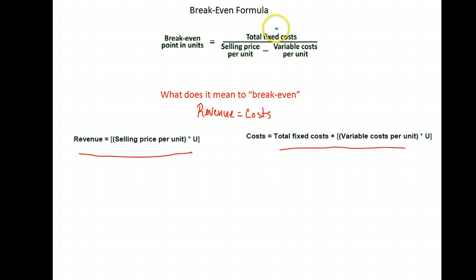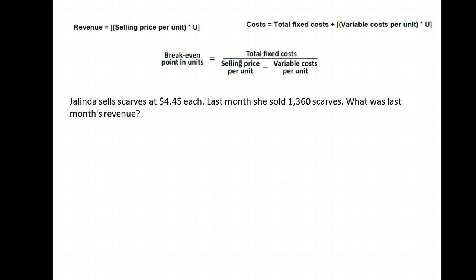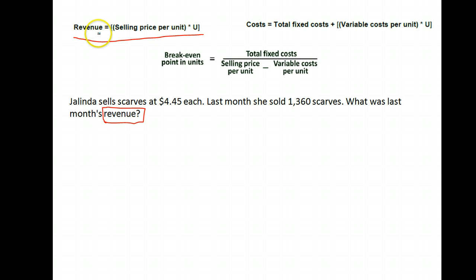Let's take a look at this question. Jalinda sells scarves at four dollars and forty-five cents each. Last month she sold 1,360 scarves. What was last month's revenue? Make sure you use the correct formula — they're asking for revenue. Revenue is the amount of money you're bringing in, so it's whatever you're selling them for times the number of units you sold. Revenue would be four dollars and forty-five cents times the number sold.